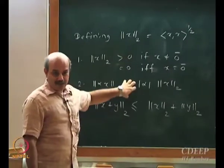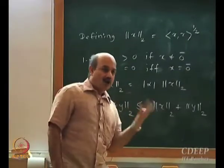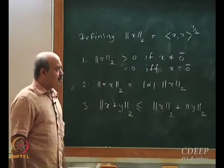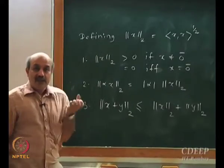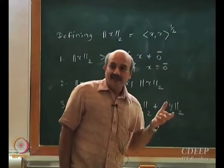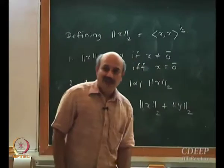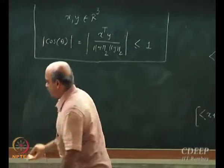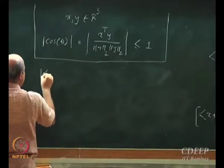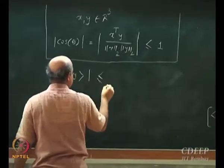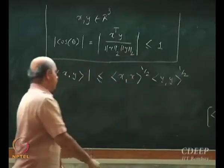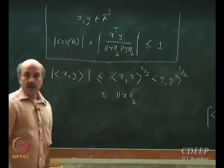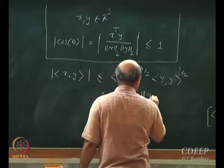So inner product defines a norm — this norm is defined using an inner product, or induced by an inner product. Now that we have a norm, which is a length measure, can we extract something more from the Cauchy-Schwarz inequality? The Cauchy-Schwarz inequality says the absolute value of the inner product is less than or equal to norm X times norm Y.